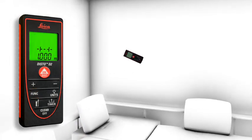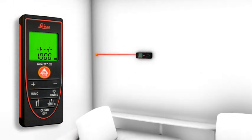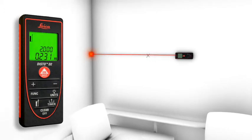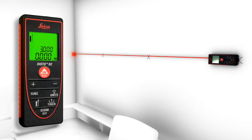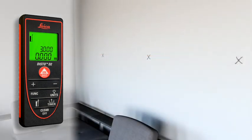The stakeout function is used to stake out equal distances. The instrument gives an audible signal as soon as a preset distance or a multiple thereof is reached.